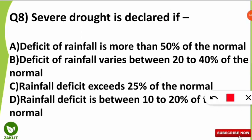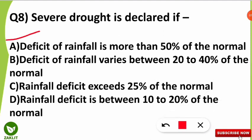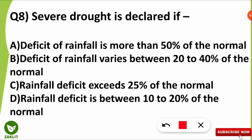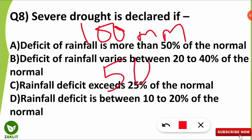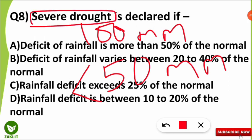The eighth question was: severe drought is declared if what condition prevails? The correct answer is option A — if the deficit of rainfall is more than 50% of the normal. For example, if a place has an average rainfall of 100 mm, then 50% of that is 50 mm. If rainfall in a given year is less than 50 mm, that year is declared a severe drought year for that place.